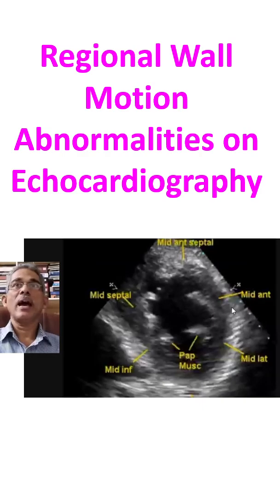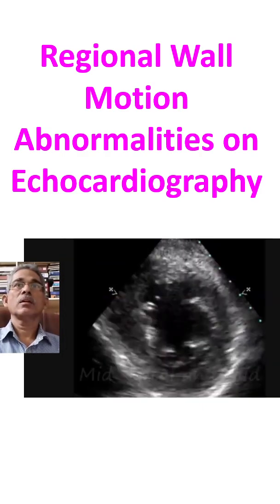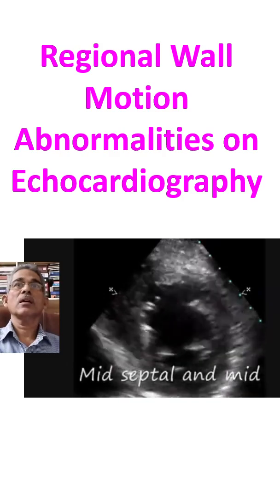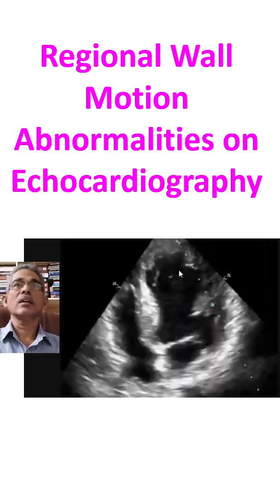This is the mid-anterior, this is mid-lateral, and you can see two papillary muscles here. This is the mid-inferior segment and this is the mid-septal segment. We will move the image. Now you can see the mid-anteroseptal hypokinesia well.